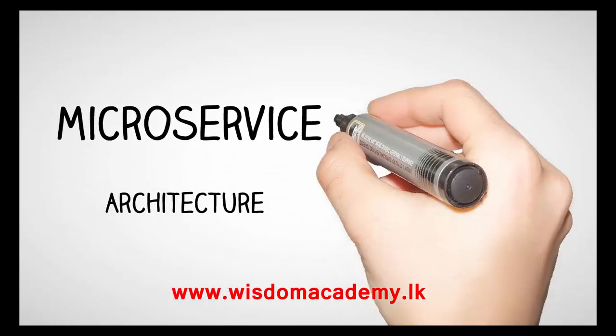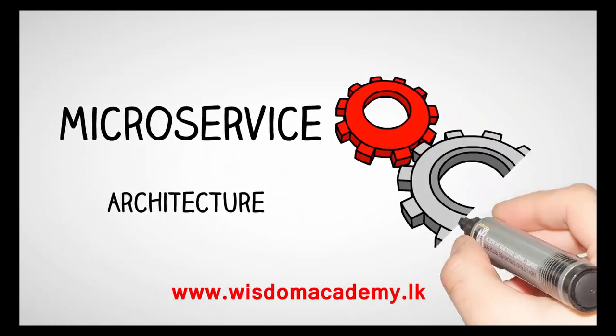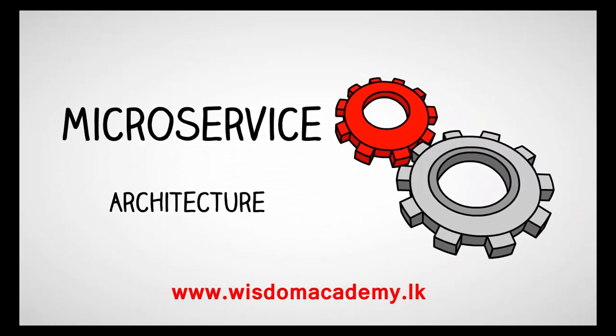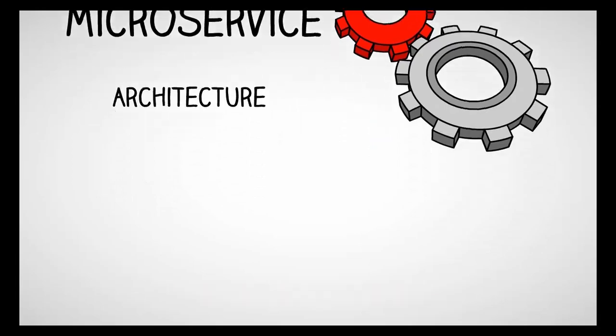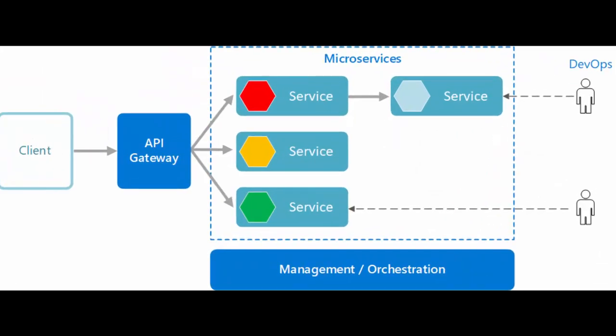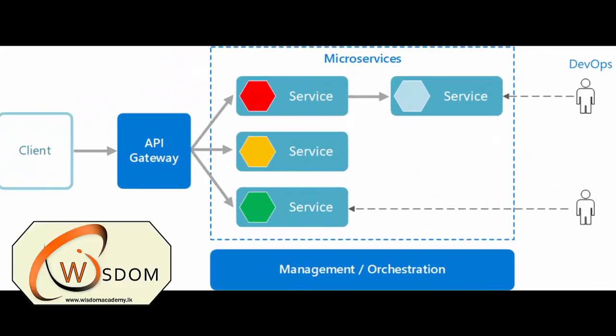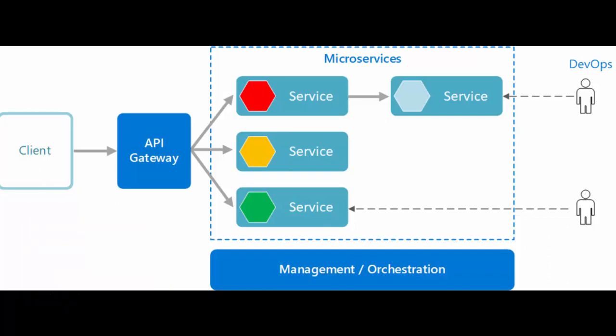Microservice Architecture is an architectural style that structures an application as a collection of services that are highly maintainable and testable, and loosely coupled, so one team's changes won't break the entire app.